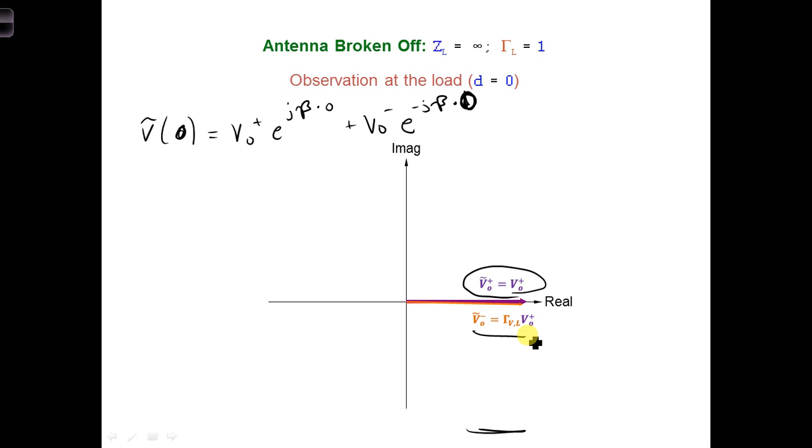We see that the voltage phasors are parallel to each other, meaning that they reinforce each other. You can also see this when we simplify the expression we have for the total voltage phasor. The exponential terms equal one, and we can rewrite the negative voltage phasor using v naught plus and the voltage reflection coefficient at the load.